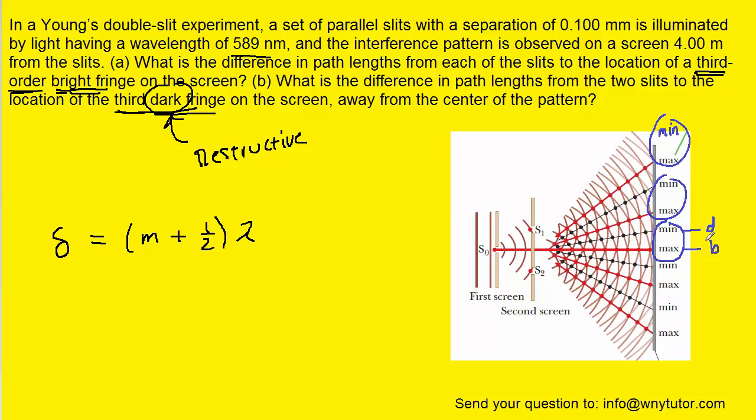And what you want to notice is that for the first pair, the m value is equal to 0. For the next pair, the m is equal to 1. And the third pair, the m is equal to 2. So strictly speaking, if the question asks for the third dark fringe, it's asking for the third minimum. But that value of m is actually equal to 2.